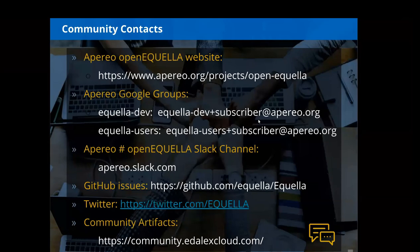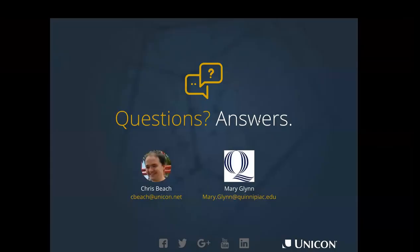As a reminder of community contacts: this community is still somewhat young as Open EQUELLA became open source relatively recently. We encourage folks to get involved through the Open EQUELLA website, Google Groups, and GitHub Issues — those seem to be the most active. There is also a Slack channel and a Twitter handle to keep up to date. The community artifacts repository at community.edelaxcloud.com is now becoming a mainstay for sharing resources and artifacts among adopters. With that, we'll open it up for any questions for Mary or myself.